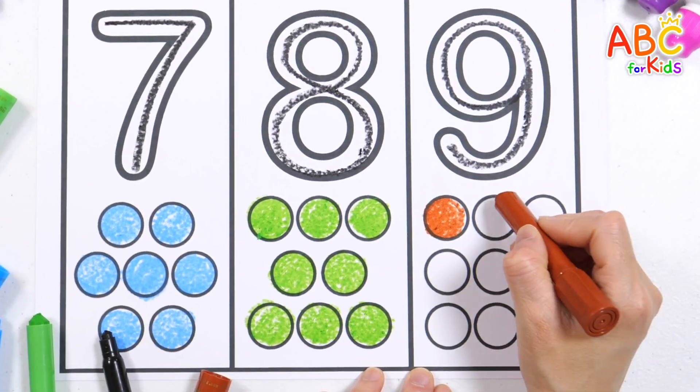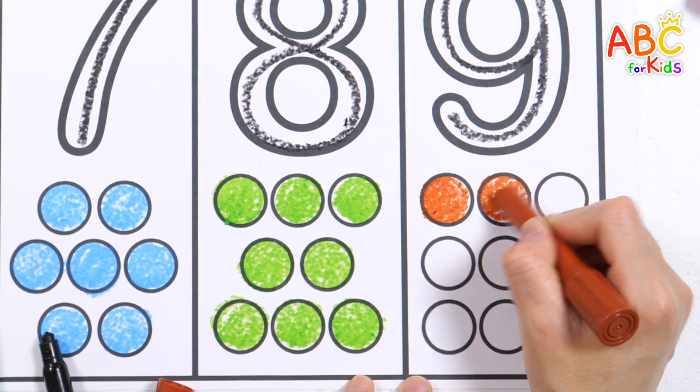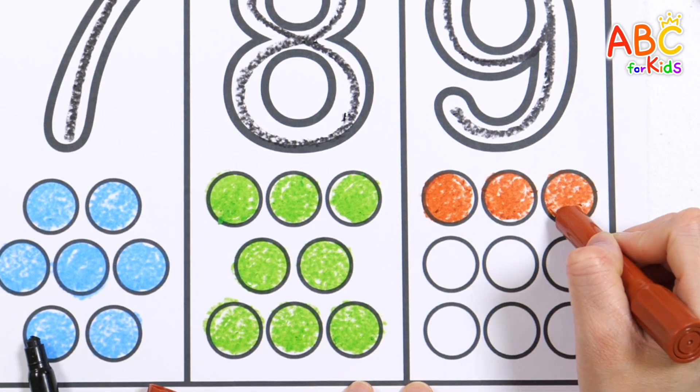O is for octopus. One. Two. One, two, three, count off with me.